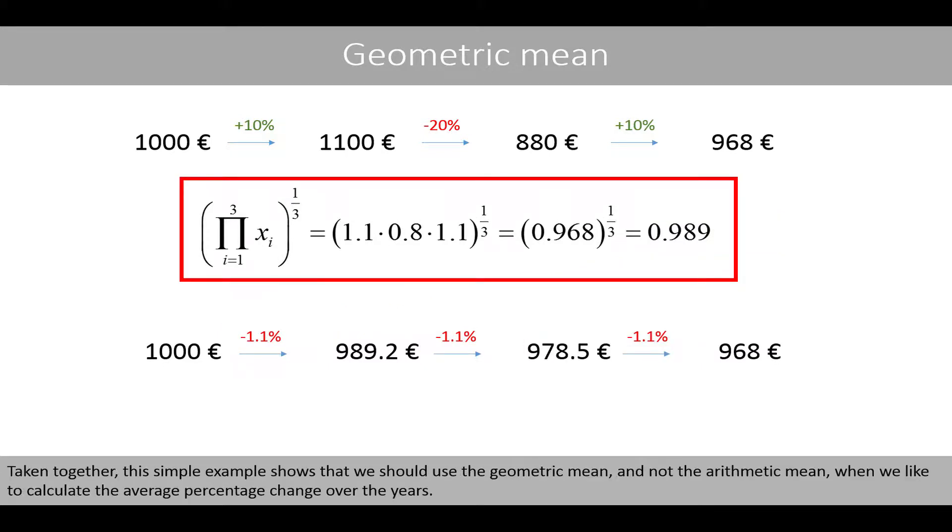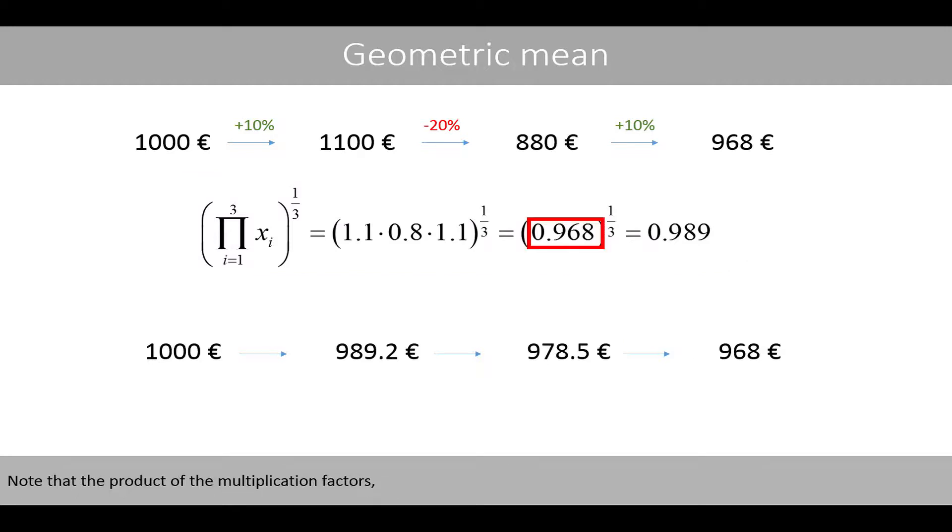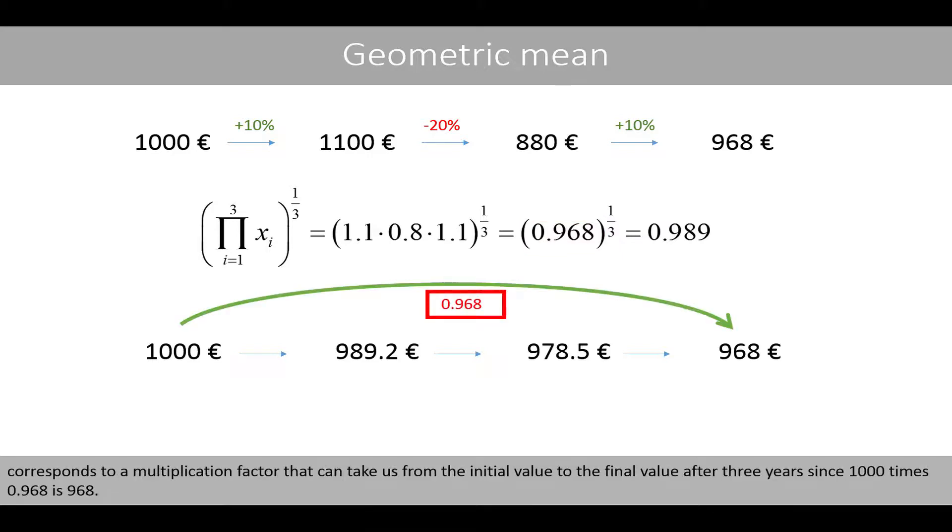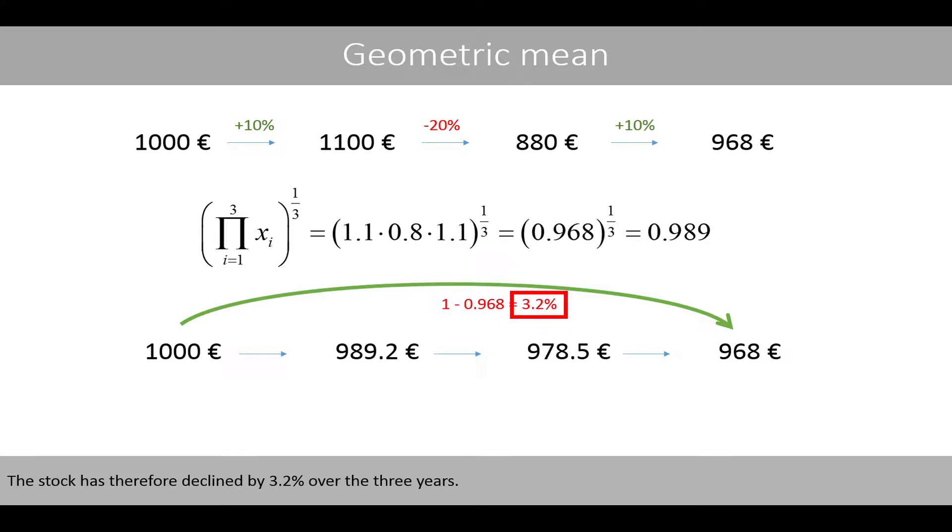Taken together, this simple example shows that we should use the geometric mean and not the arithmetic mean when we like to calculate the average percentage change over the years. Note that the product of the multiplication factors corresponds to a multiplication factor that can take us from the initial value to the final value of the three years since 1,000 times 0.968 is 968. The stock has therefore declined by 3.2% over the three years.